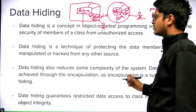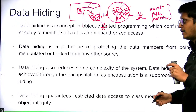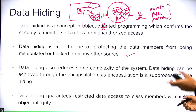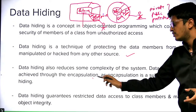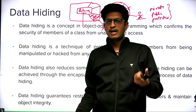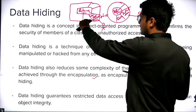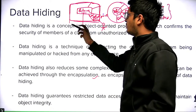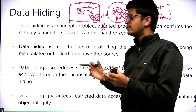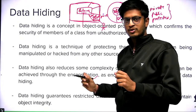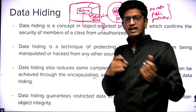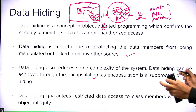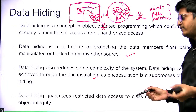Data hiding is a technique of protecting the data members from being manipulated or hacked from any other source. Data hiding also reduces complexity of the system. Data hiding can be achieved through encapsulation. The process of creating a capsule — of binding the data members and methods into a capsule — is called encapsulation, and through encapsulation we can achieve data hiding.